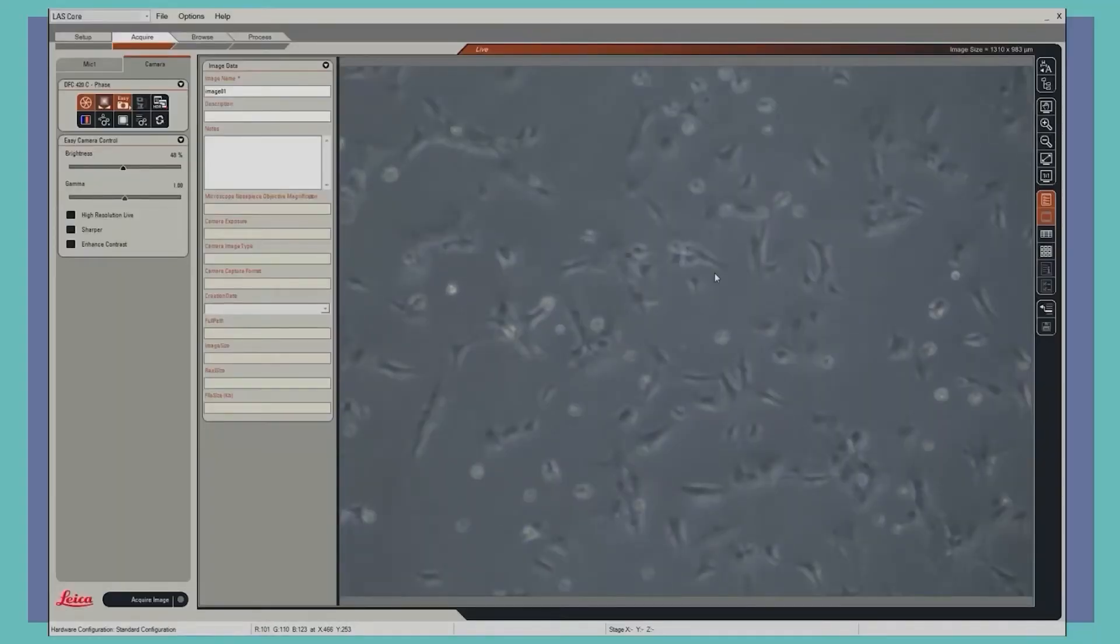This is what the live cell feed from the tissue culture microscope camera looks like on a computer. Here we can clearly see an evenly distributed population of cells from our flask.